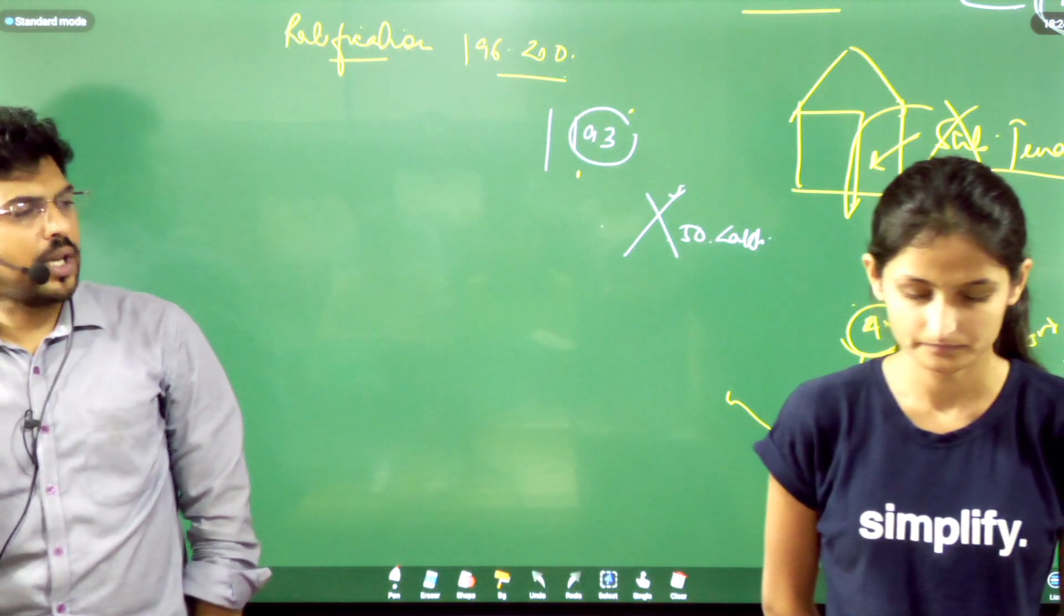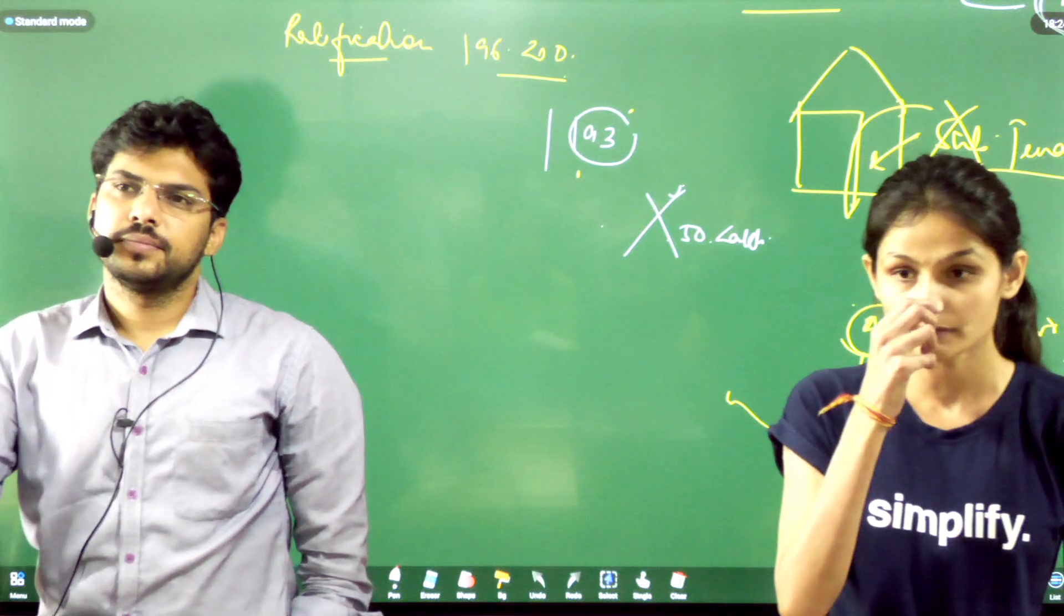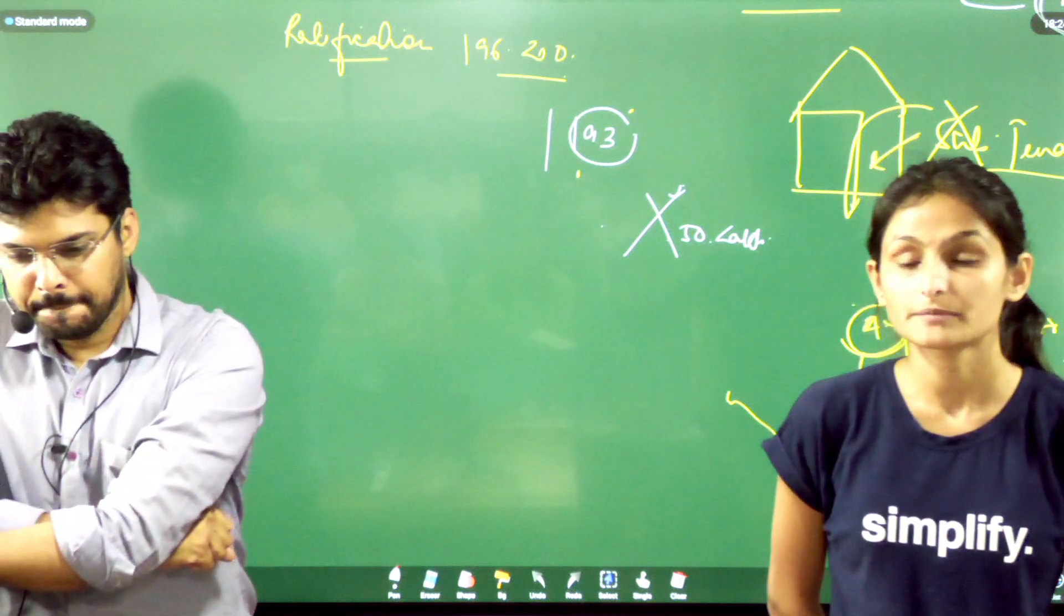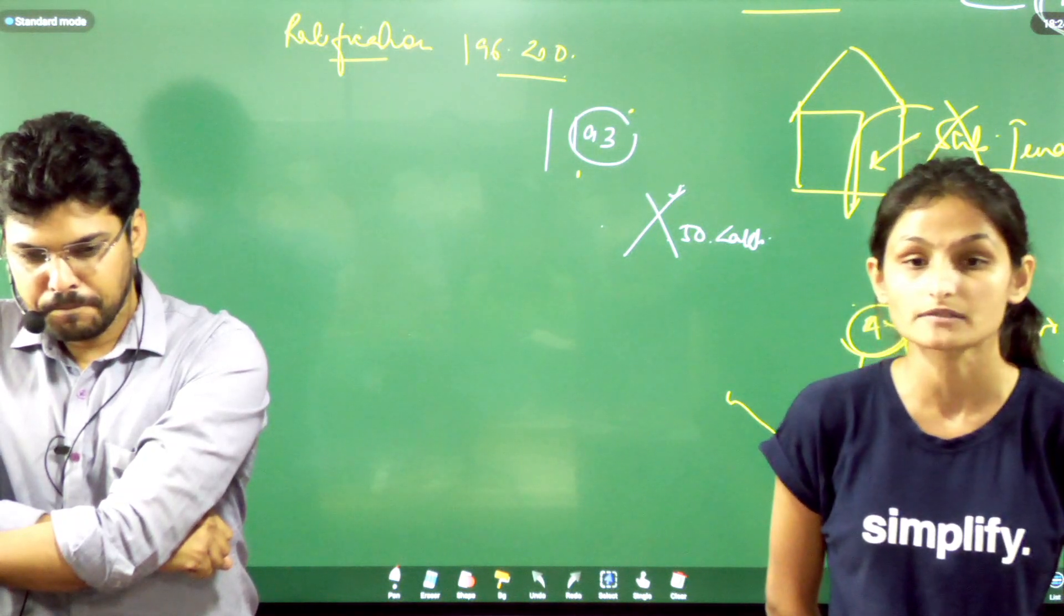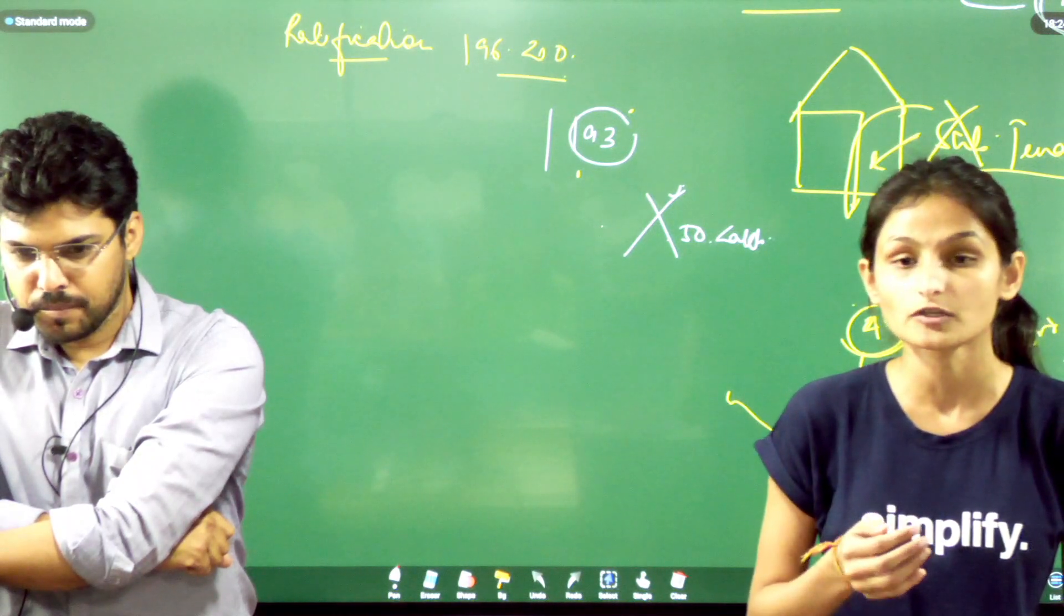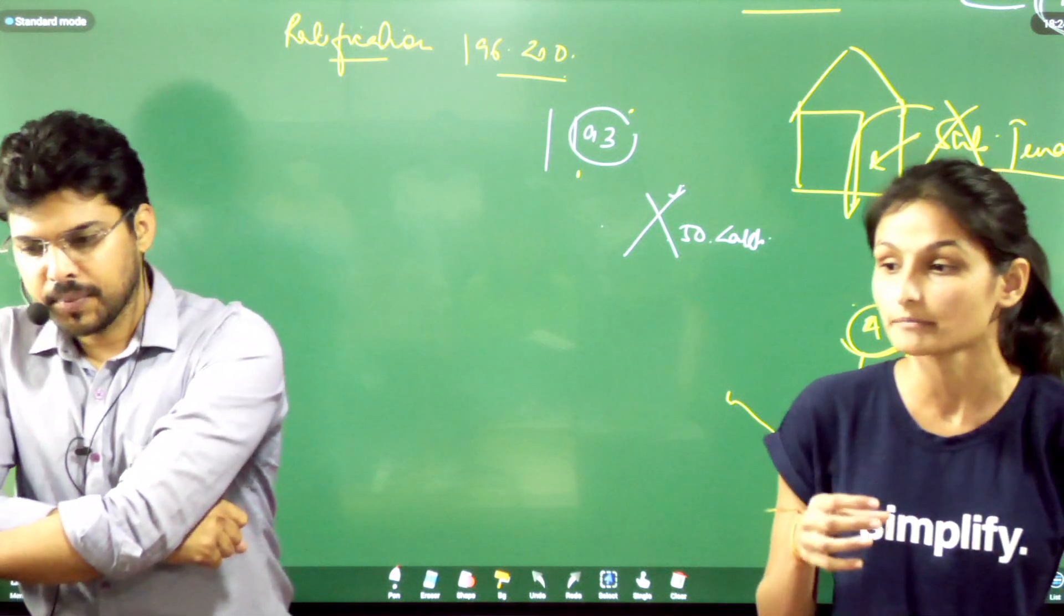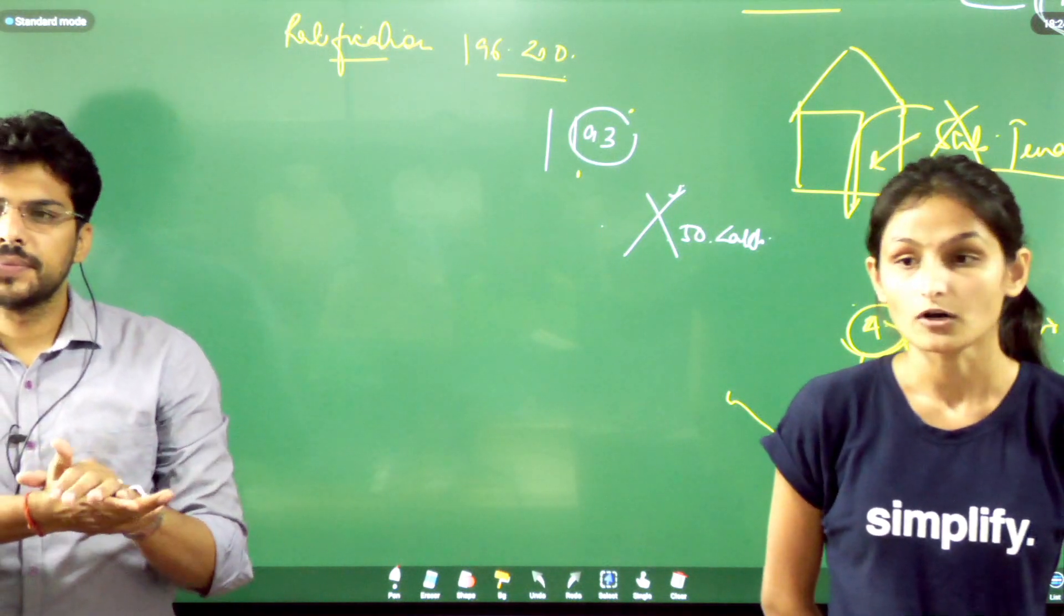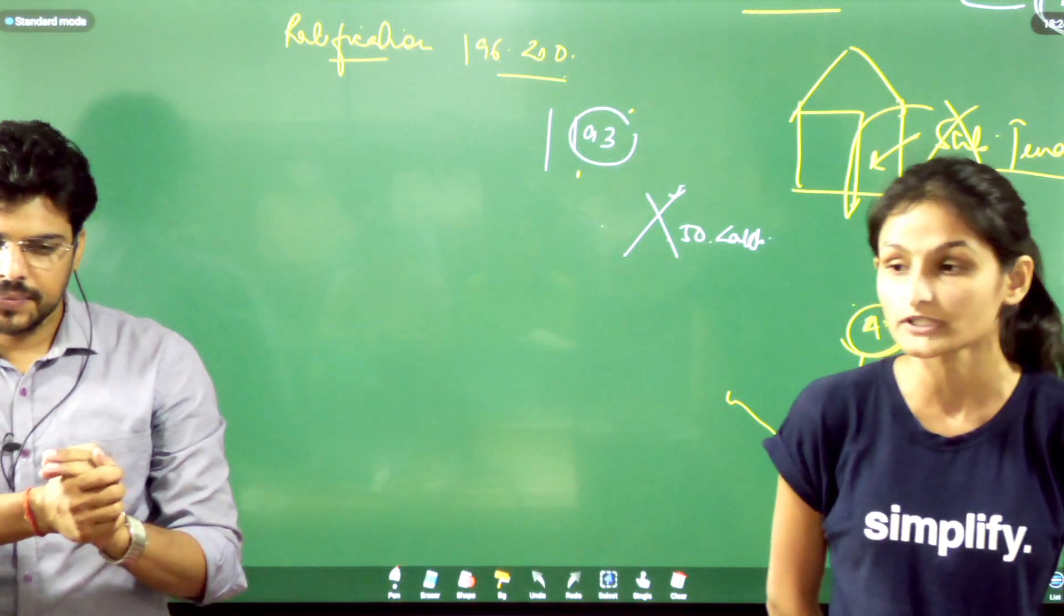Section number 15 - who may obtain specific performance? Following persons may obtain specific performance: first, parties to the suit. Second, representative in interest and principal, provided that representative and principal shall not obtain specific performance if it is based on personal qualification of the parties, and unless representative in interest or principal has performed their part of the contract and it is accepted by the other parties or their representative in interest or principal. Third, when it is a contract on settlement of marriage or compromise of doubtful rights between the parties, any person who is beneficially entitled therein.